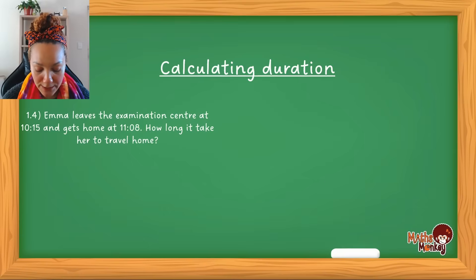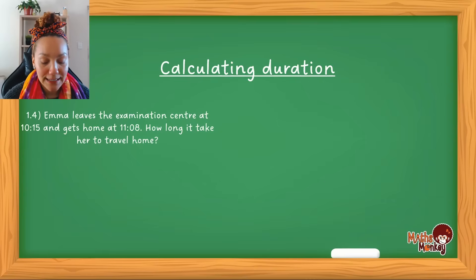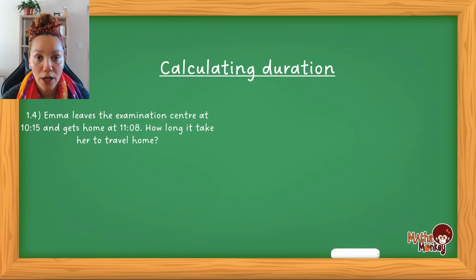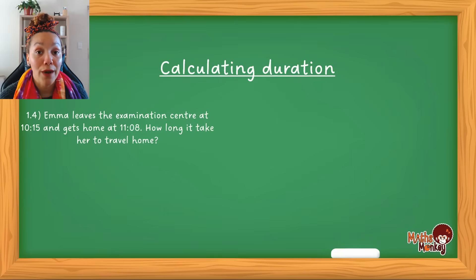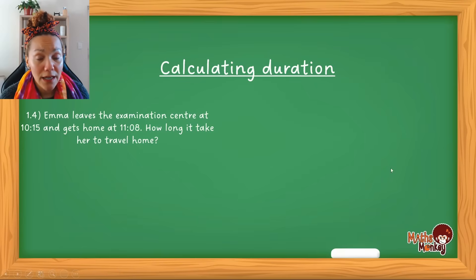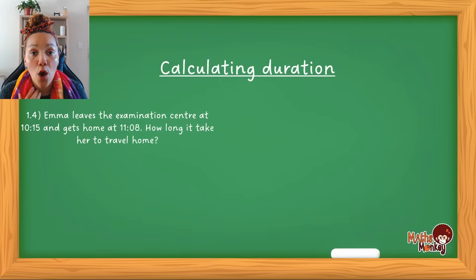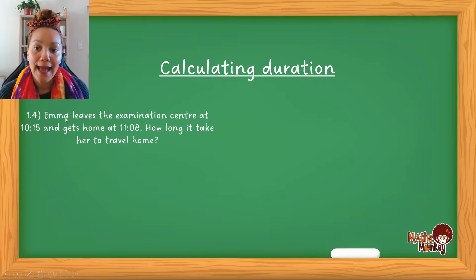Now let's bring in the calculator. The reason I want to teach you how to use it is because it's very easy to make mistakes when doing time calculations. Sometimes there are weird amounts of minutes or seconds that throw your calculations off. I'm going to teach you to use your scientific calculator to do time calculations. Please have your calculator with you as we go through this. Question 1.4: Emma leaves the examination center at quarter past ten and gets home at eight minutes past eleven — how long did it take her to travel home?